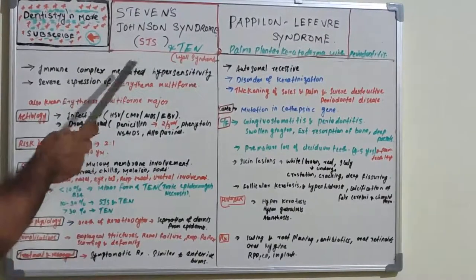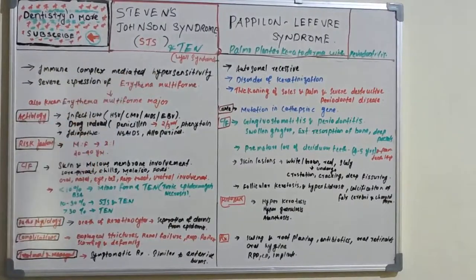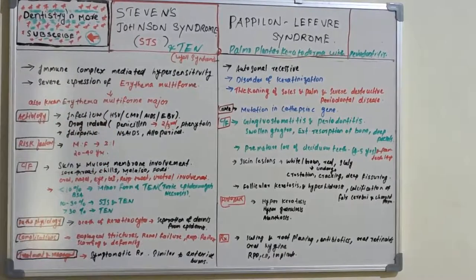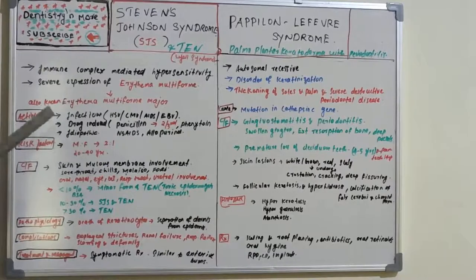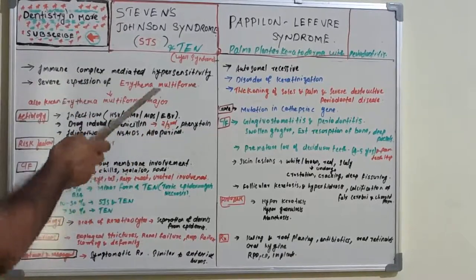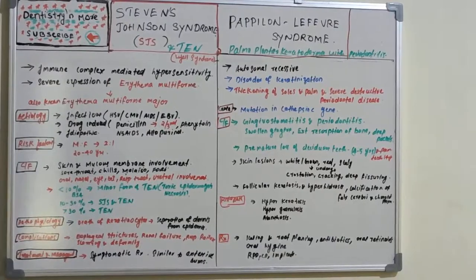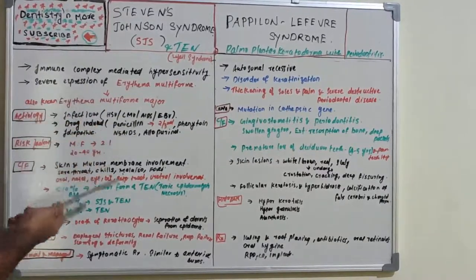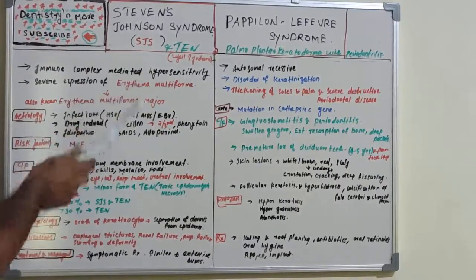Stevens-Johnson syndrome is an immune complex-mediated hypersensitivity reaction to certain drugs or infections. It is a severe expression of erythema multiforme — also known as erythema multiforme major. Erythema multiforme is a skin immune reaction due to infection or medication; the name means 'red, many shapes,' describing the bullseye-patterned rash on the body.